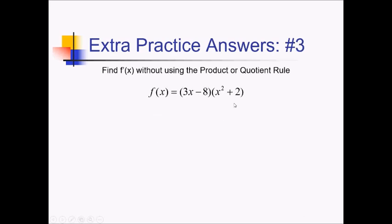To take the derivative of this one without using the product or quotient rule, we're going to have to simplify first. So we can do that by distributing or foiling, if you will. So we've got 3x times x squared giving us 3x cubed, 3x times 2 is 6x. And then this is going to be negative 8x squared. And then finally minus 16.